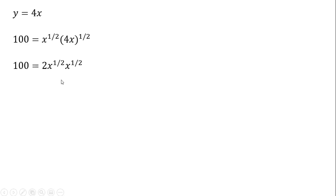Square root of 4 is 2, and we get again x to the 1 half, simplifying, and dividing through by 2, x equals 50, and since y equals 4x, y will equal 200.